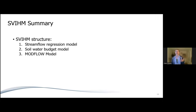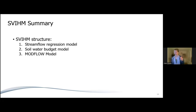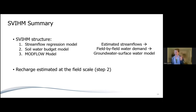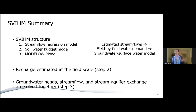To summarize the structure: the three components — the stream flow regression model, the soil water budget model, and ModFlow — estimate stream flow, a field-by-field water demand and irrigation, and then use those to run a groundwater-surface water model. Key takeaways are that recharge is estimated at the field scale on a daily basis in step two, and groundwater heads, stream flow, and stream-aquifer exchange are solved together in step three.